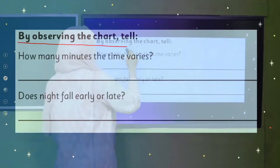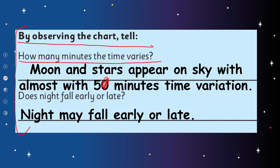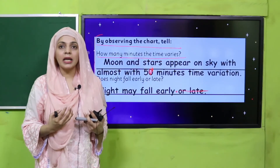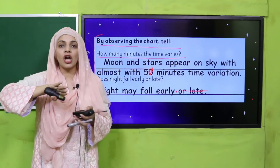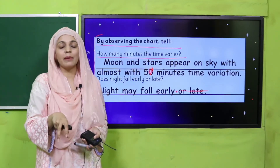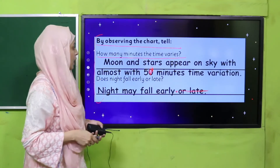Iske baad aapni observation is chart mein record karni hai. How many minutes does the time vary? Moon and stars appear on sky with almost 5 minutes time variation. And does night fall early or late? Night may fall early or late — aaj kal kyunki early hai, aapko early ya late batana hai. Din ka waqt chhota hota ja raha hai, toh raatein jaldi hain. Is month of September mein din ab short hote ja rahe hain — night comes early.